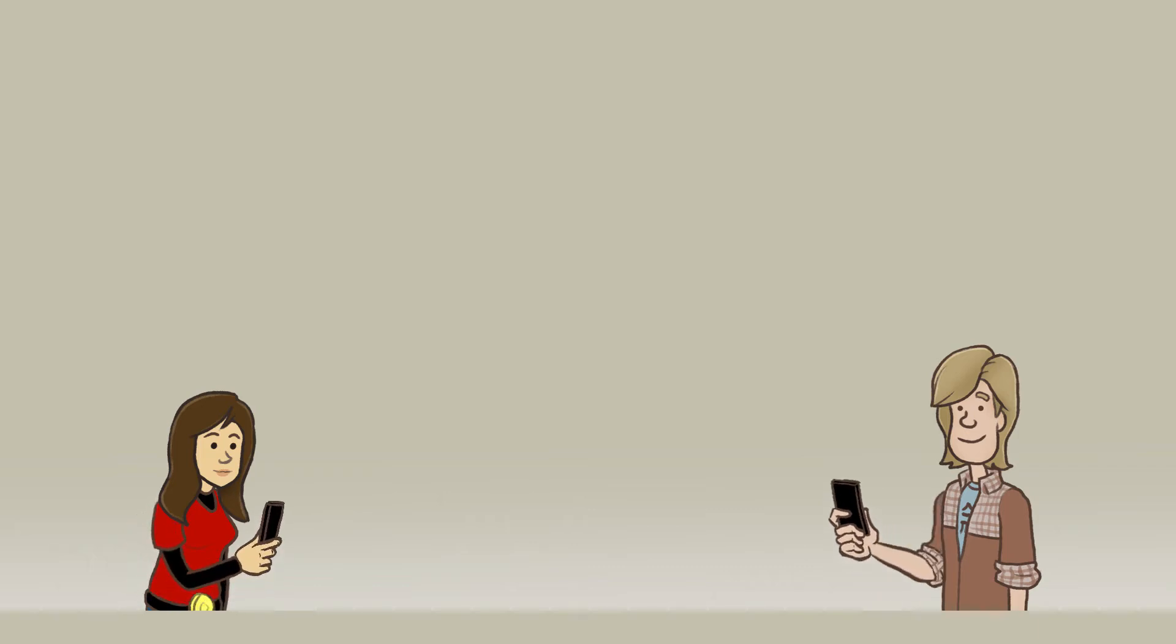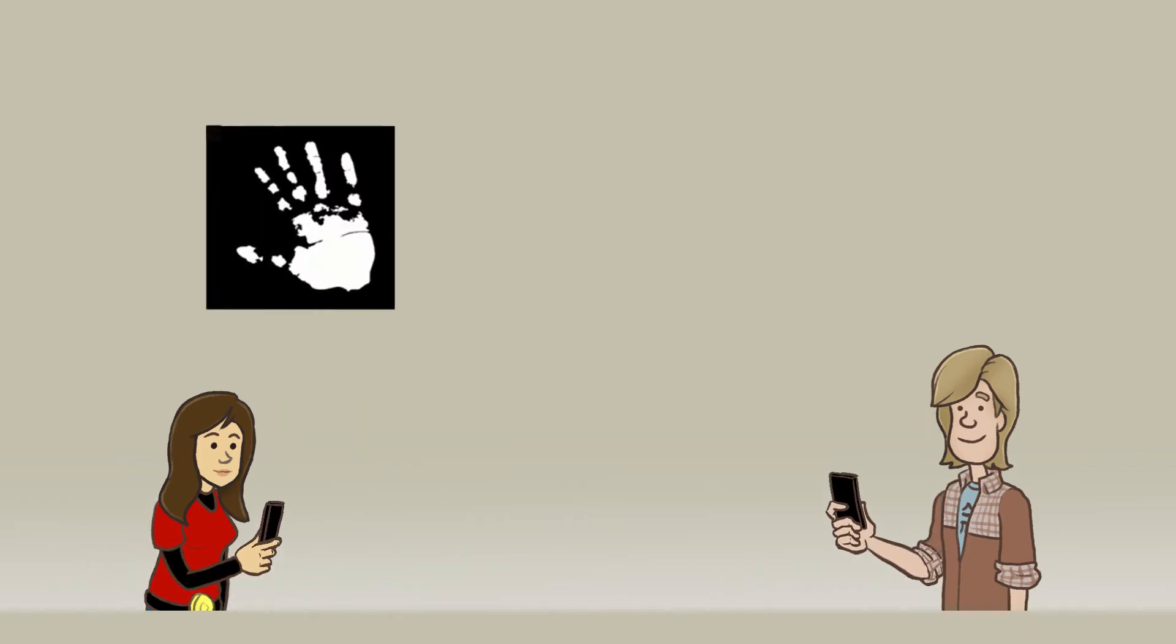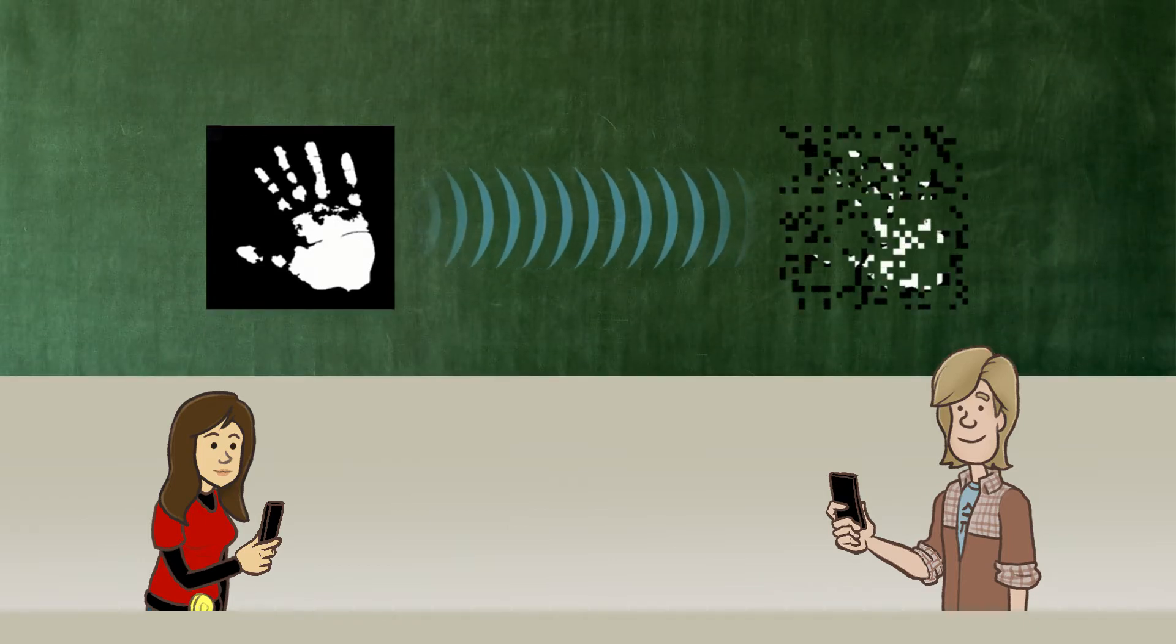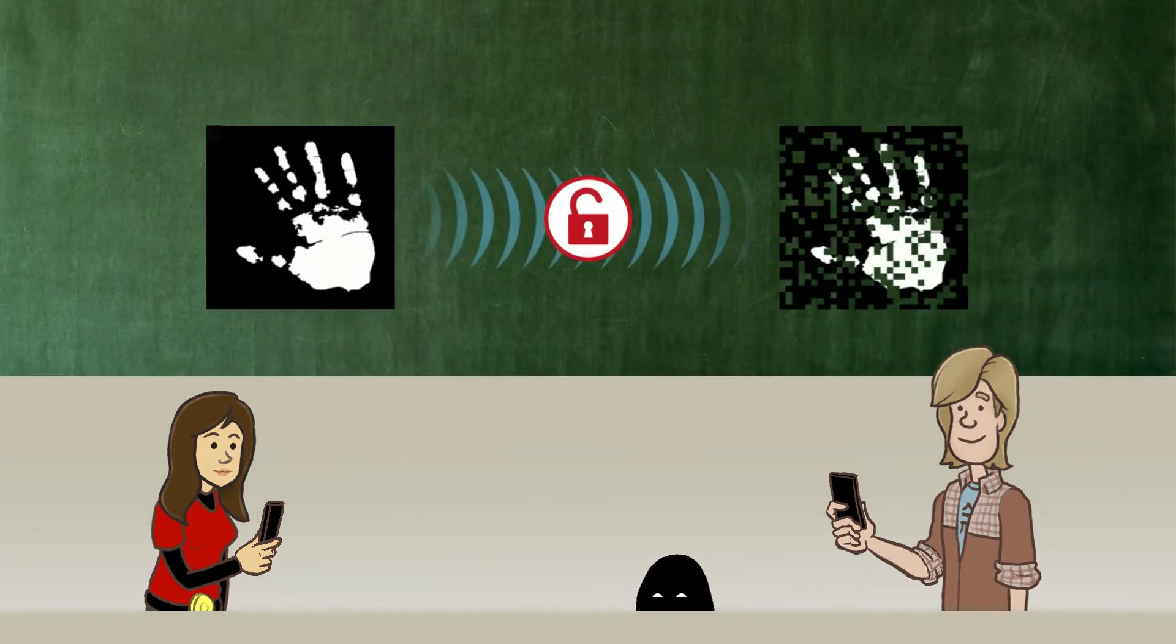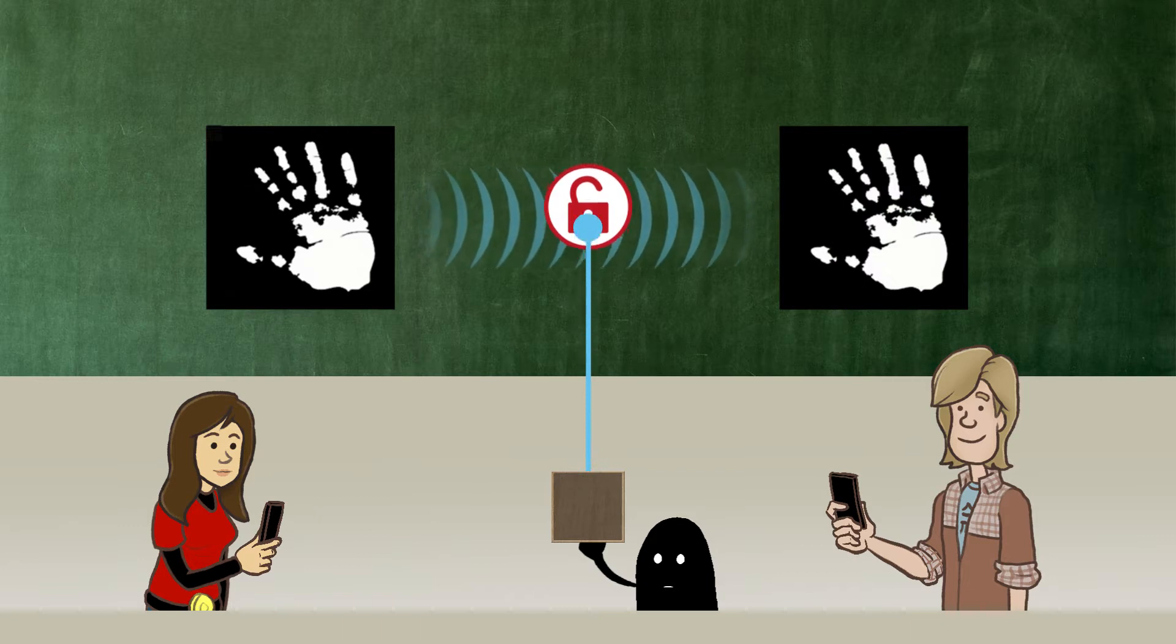Alice would like to send Bob a message, say this picture for example. But watch out, unencrypted messages are not secured on the internet against eavesdropping.